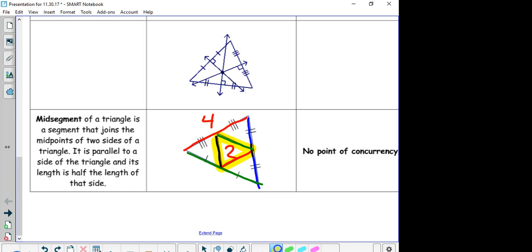Now, there's no points of concurrency. Let's remember what the word concurrency means. Concurrency means three lines that cross in this context. That means three lines that cross. Let's continue.